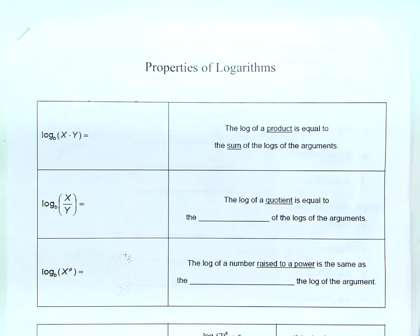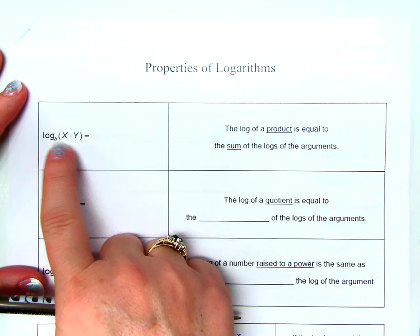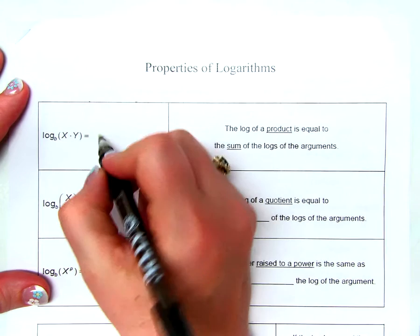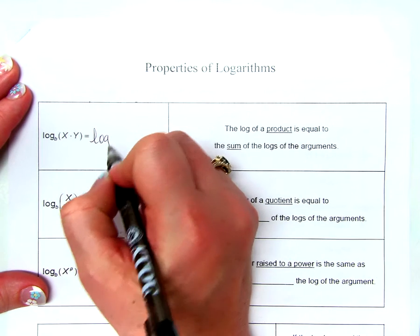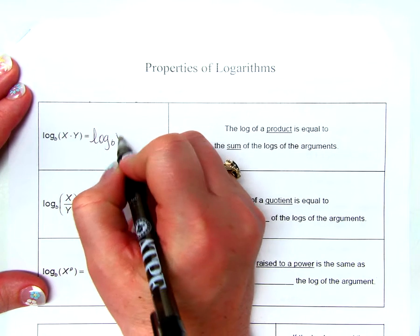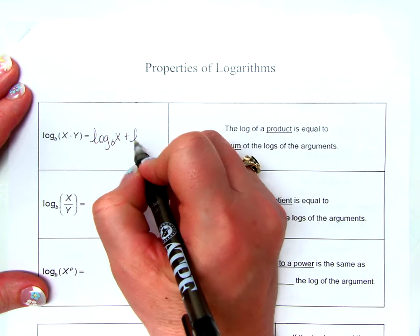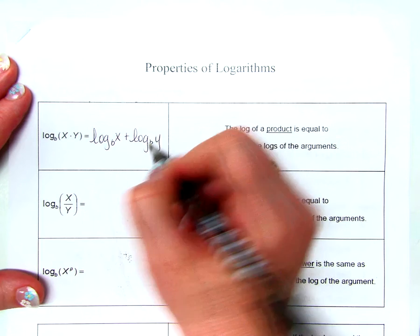Properties of logarithms. Log base B of x times y will result in log base B of x plus log base B of y.